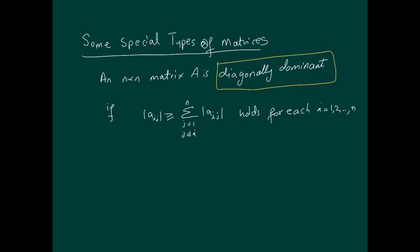First, we'll look at diagonal dominance. A diagonally dominant matrix A is one where the diagonal entries are greater than or equal to the sum of the absolute values of all the other entries in that row.